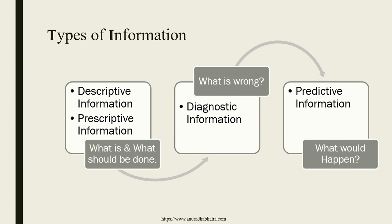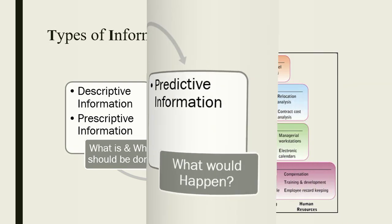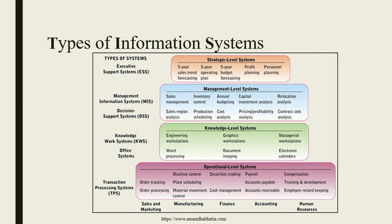After knowing the different types of information, we look at the types of information systems. These are arranged in levels — like steps. The types of systems include Executive Support System (ESS), Management Information System (MIS), Decision Support System (DSS), Knowledge Work System (KWS), Office System, and Transaction Processing System (TPS).